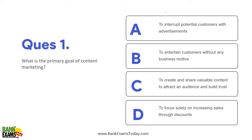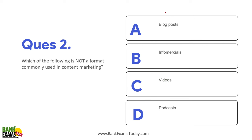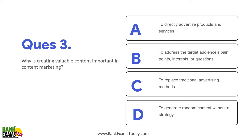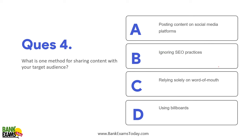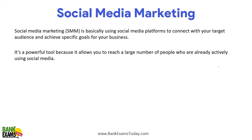The primary goal of content marketing is to create and share valuable content to attract an audience and build trust. Formats used in content marketing include podcasts, videos, and blog posts — an infomercial is not a standard format. Creating valuable content is important to address the target audience's pain points, interests and questions. One method for sharing content with your target audience is posting on social media platforms.